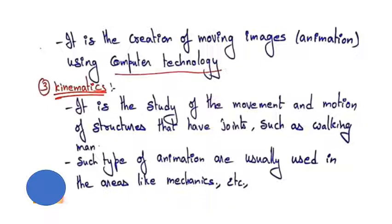Kinematics is the study of the movement and motion of structures that have joints, such as a walking man. This type of animation is usually used in areas like mechanics - you can see movement like cars, bikes, or someone walking.